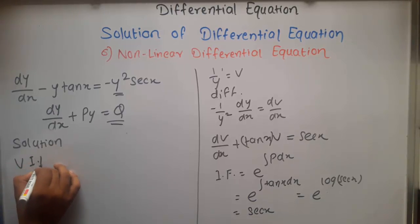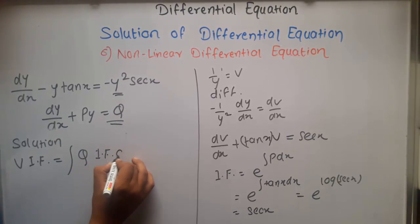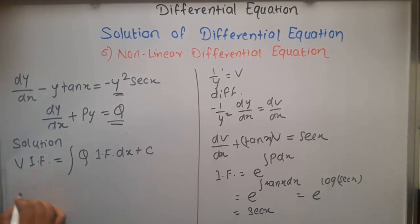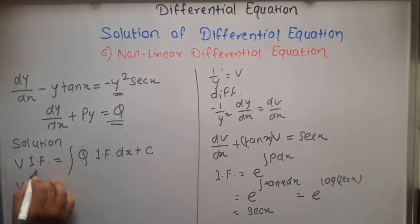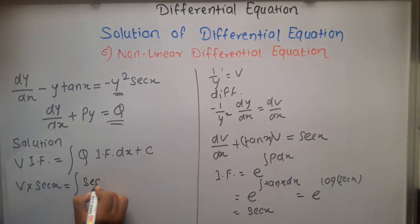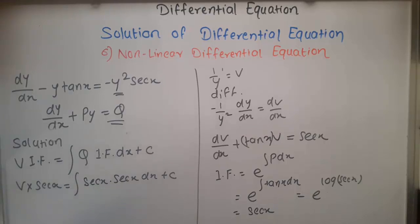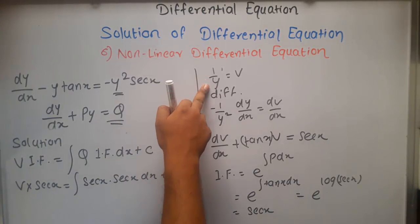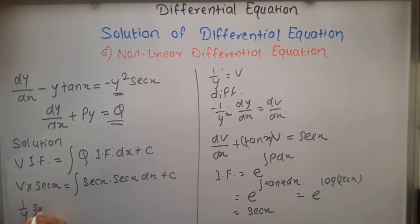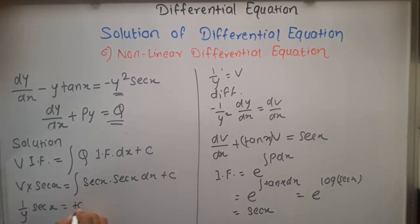Using the solution formula v · (IF) = ∫Q · (IF) dx + C, we get v · sec x = ∫sec x · sec x dx + C = ∫sec²x dx + C = tan x + C. Substituting back v = 1/y, the final solution is (1/y)·sec x = tan x + C.